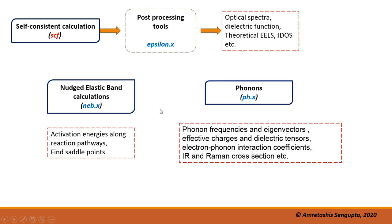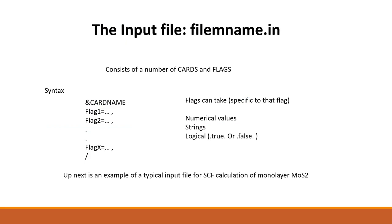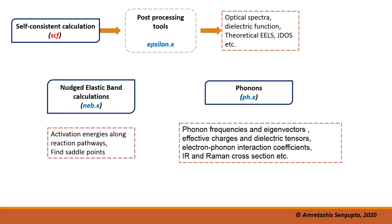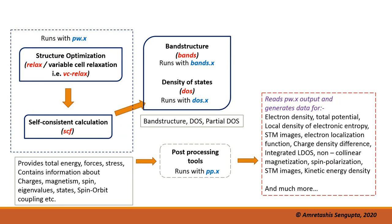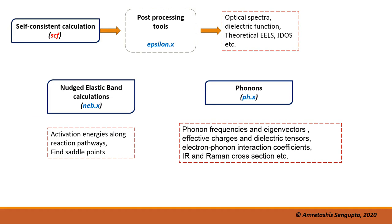Apart from that, Quantum Espresso also has other features like the nudged elastic band calculations which gets you the activation energies along the reaction pathways to find saddle points. Then you can do phonon calculations to get various parameters associated with the phonon structure of the system. There are even more possible options and executables, but right now I am going to discuss only some of them. As we go further in the tutorial series, we will discuss different modules like SCF calculations, optimizations, post-processing tools, DOS, band structure, NEB, phonon, and more.